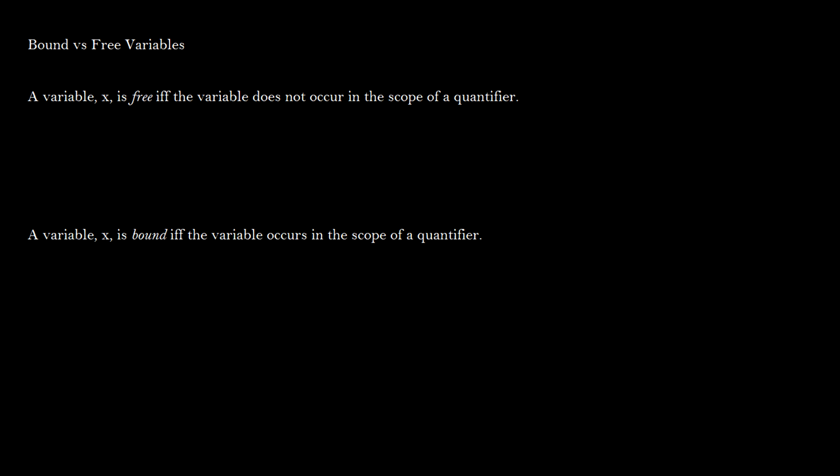Today we're going to be talking about different types of variables, mainly bound versus free variables — what is acceptable in a sentence in predicate logic and what is not. We say that a variable x is free if it does not occur in the scope of a quantifier.